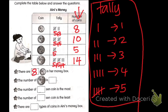The number of 50-cent coins is fourteen pieces. The coin with the most is 50 cent. The coin with the least is 20 cent. There are four types of coins in Aini's money box.